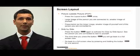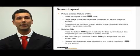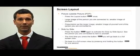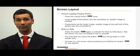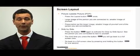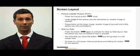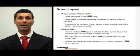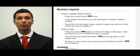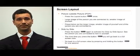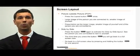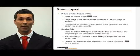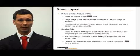Side by side. Press the layout button again to activate the side by side layout. You will now see the person you are connected to next to the image of yourself. The third time you press the layout button, you will go back to a full screen view. You will always go back to a full screen view by pressing and holding the layout button for one second.